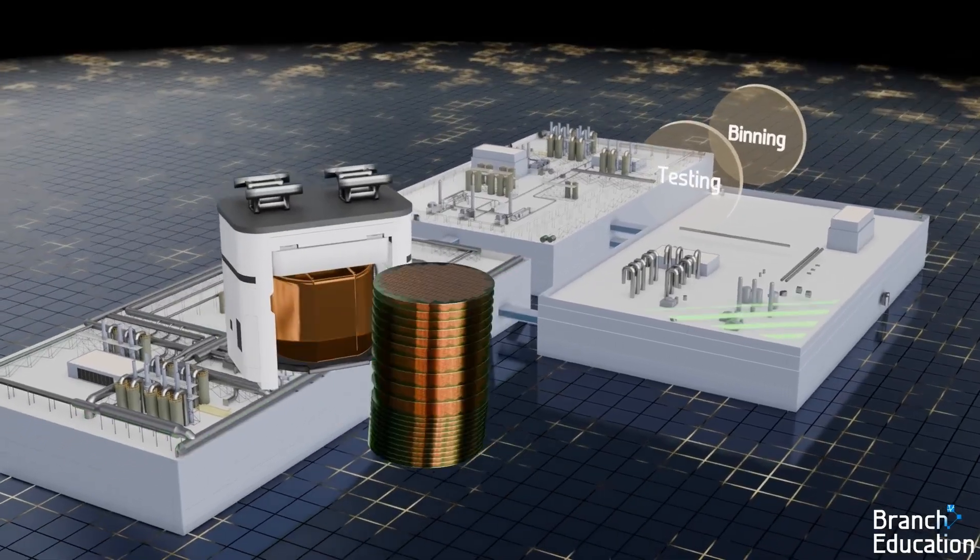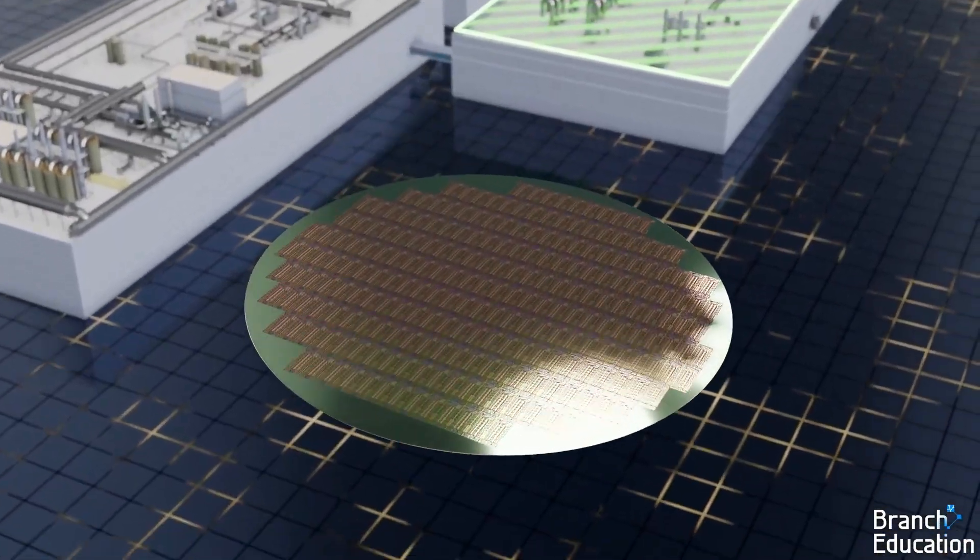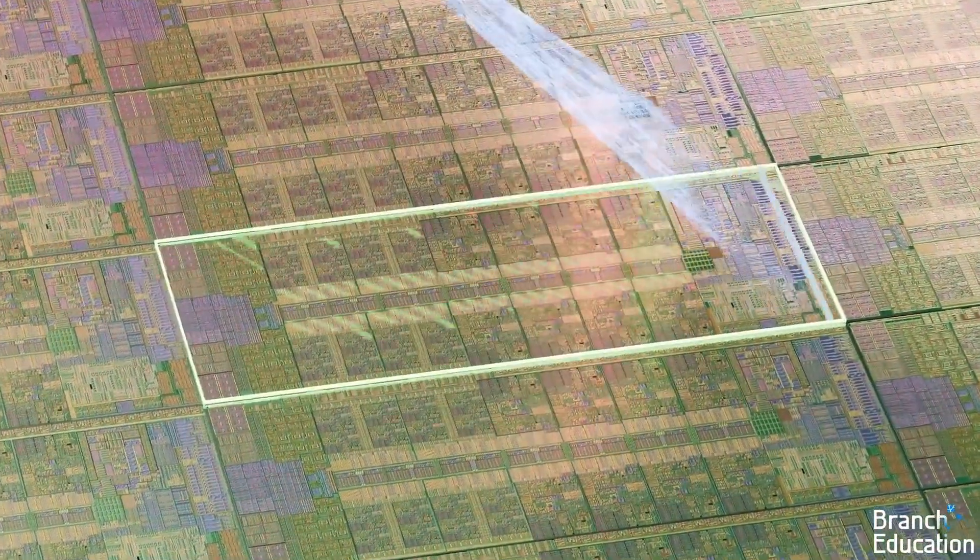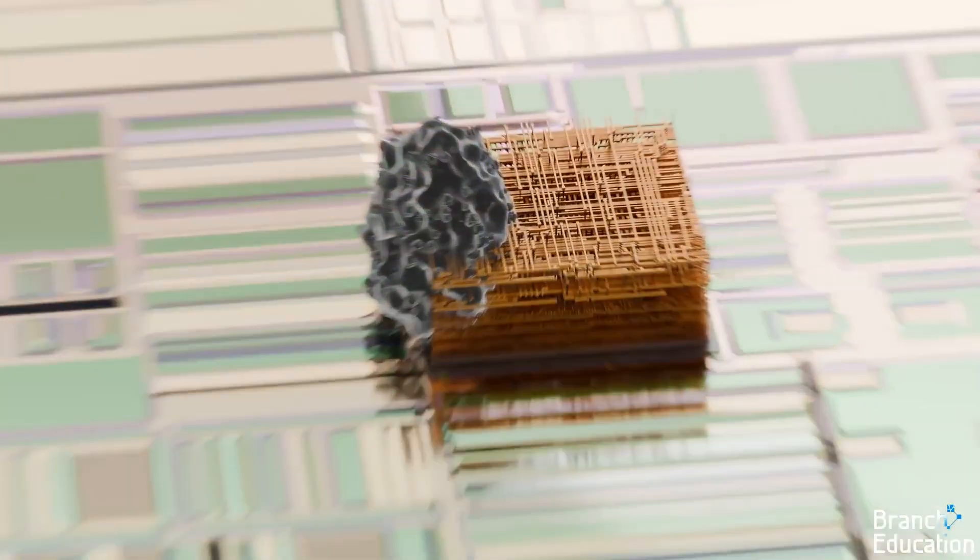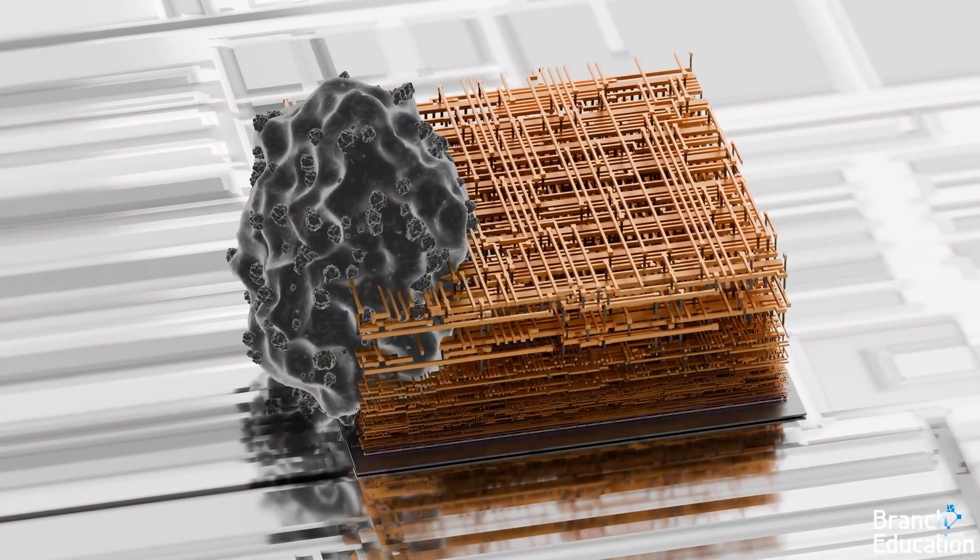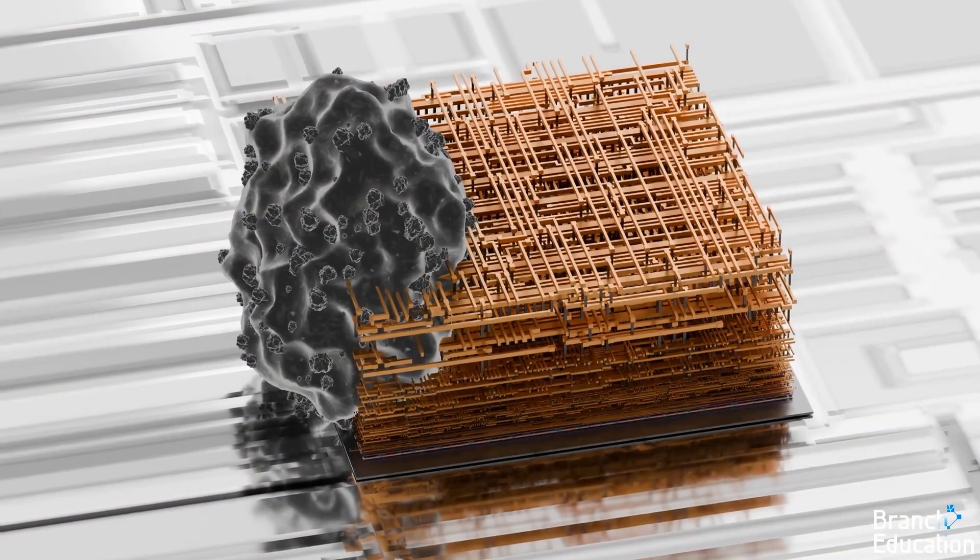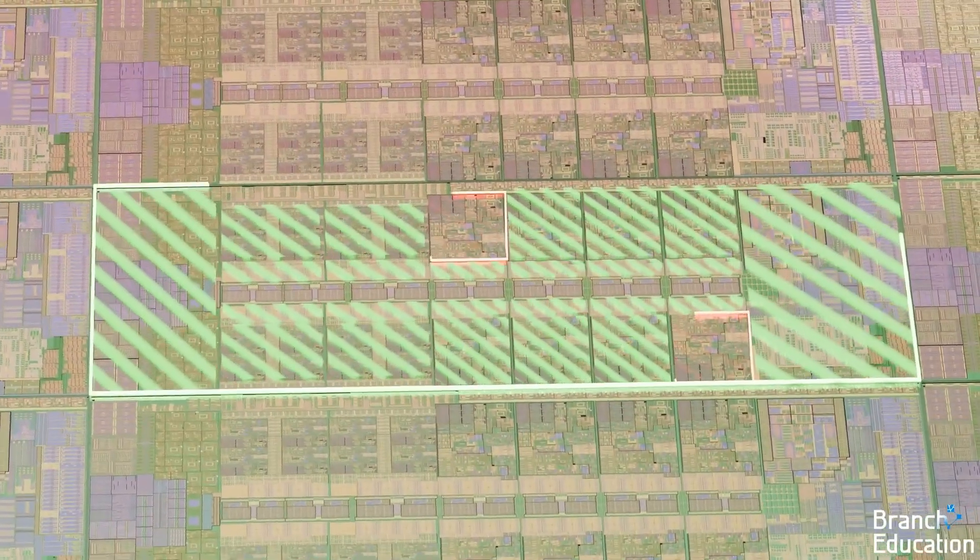The completed wafer is sent to a separate building where each of the CPUs undergoes rigorous testing to figure out if it works as intended. If a CPU works, that's great. But frequently, a particle or photomask defect has damaged a section of the integrated circuit, rendering that section defective.